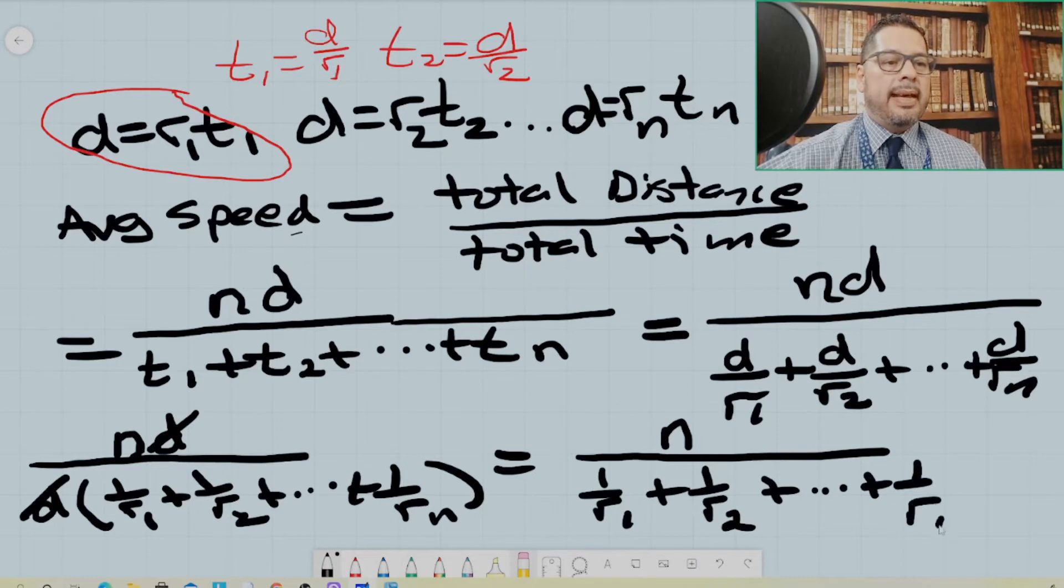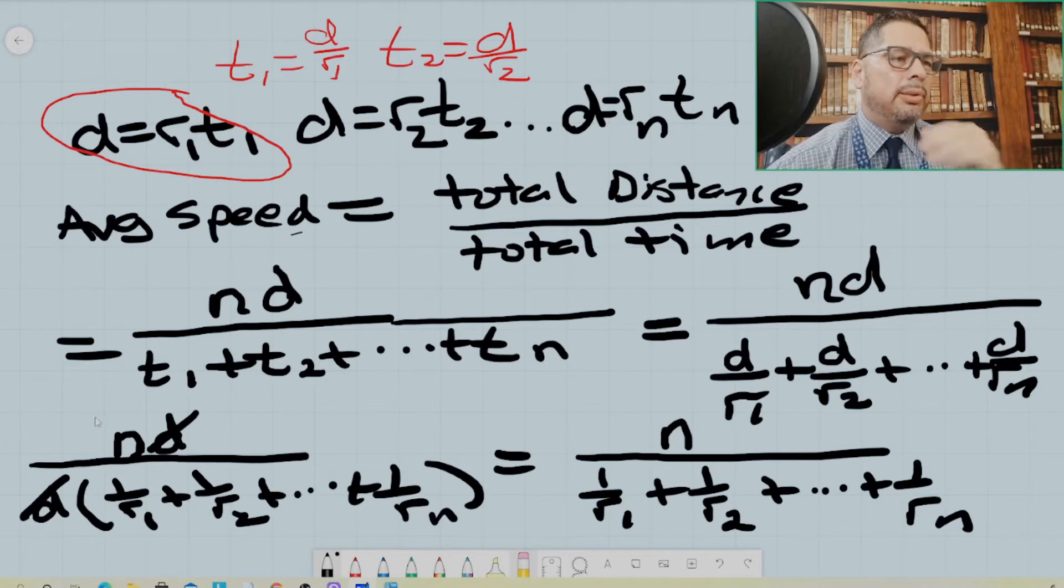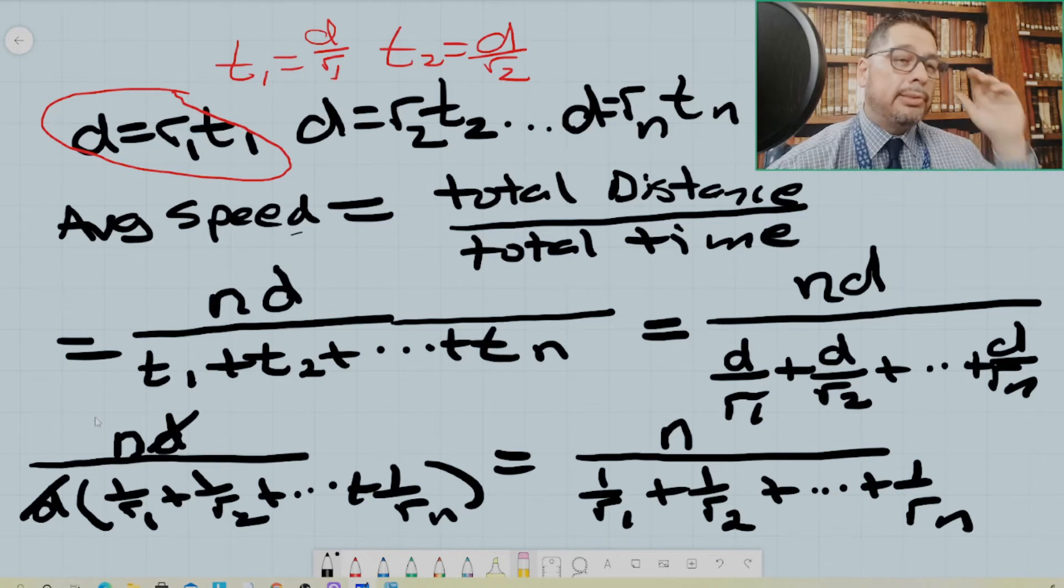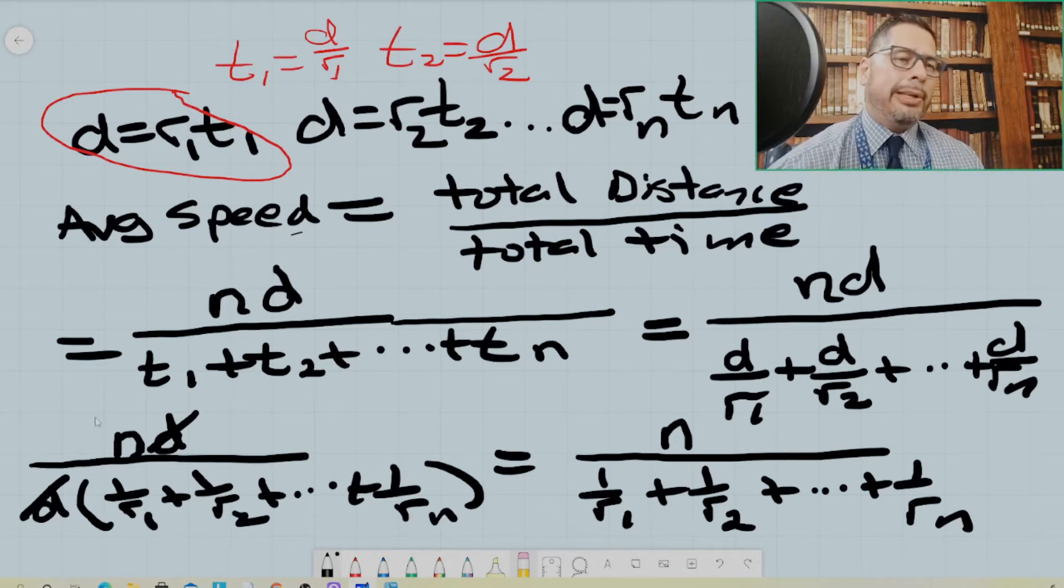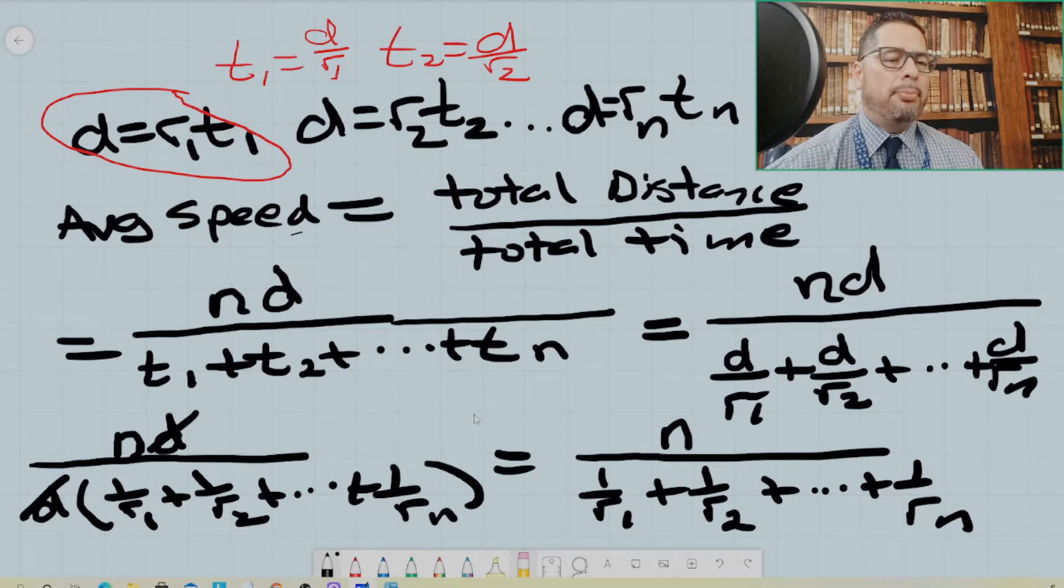And that's how it is. So harmonic mean pops out or is the solution when the same distance is traversed several times with different rates and hence different times. And the question posed is, what is the average speed of his total journey? So we're going to take a look at a couple UIL problems where the harmonic mean can be quickly used to solve the problem.